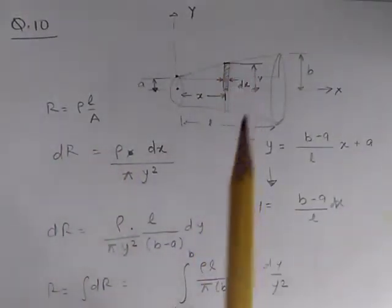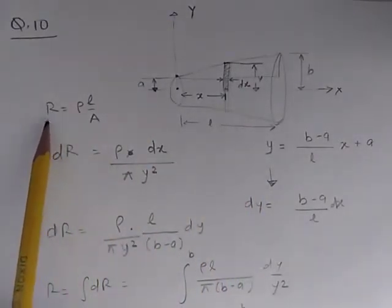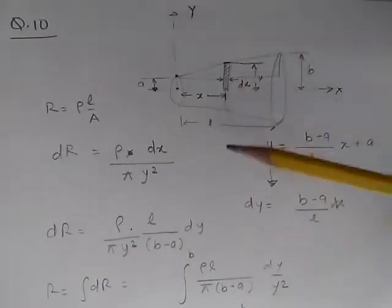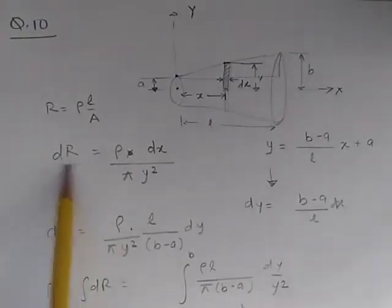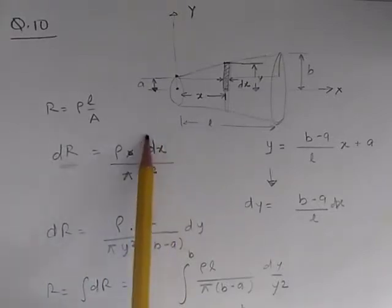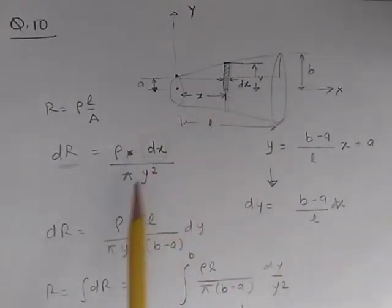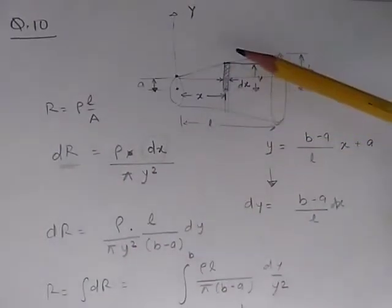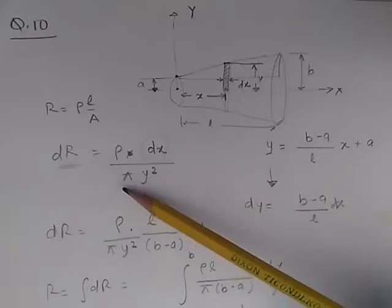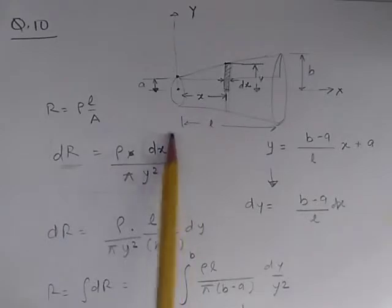That disk will have a resistance, and we're trying to find the resistance of that thin circular disk. We know that resistance is given by R = ρL/A. For this small disk, the resistance we're calling dR, the infinitesimal resistance, depends upon the infinitesimal thickness dx. It's given by dR = ρ dx divided by the area of the cross-section of this disk. Since its radius is y, its area is πy².